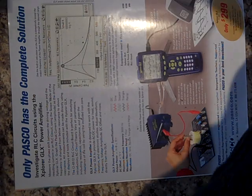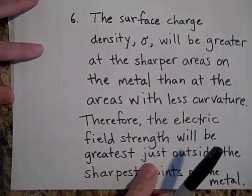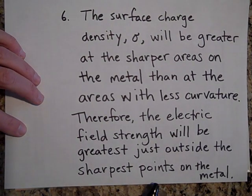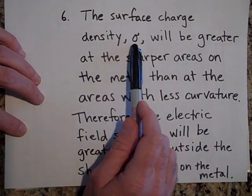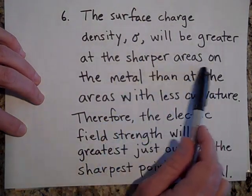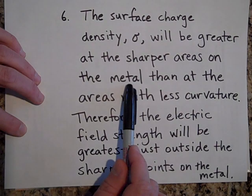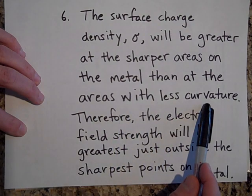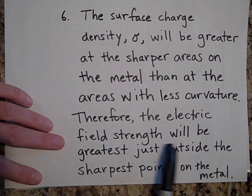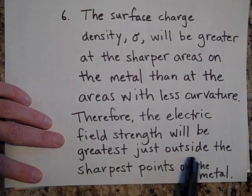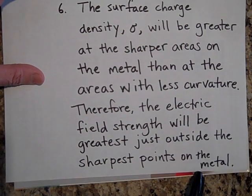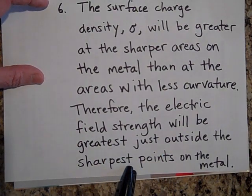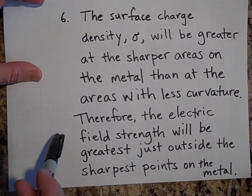This last one is longer — I'm going to give you a handout of these six things, so you don't have to worry about copying it all down. The surface charge density sigma will be greater at the sharper areas on the metal. Any sharp points on the metal will have more sigma than areas with less curvature. Therefore, the electric field strength will be greatest just outside the sharpest points on the metal.